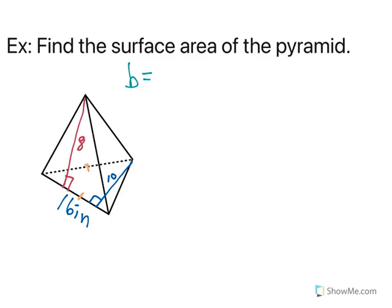So B is 16. The height of the base, which you can see here on the bottom, is 10. And then, as we noted in our formula, C is going to be the slant height. So it's going to come from the apex of the pyramid to the side and form a right angle. So C is 8.